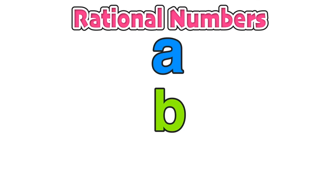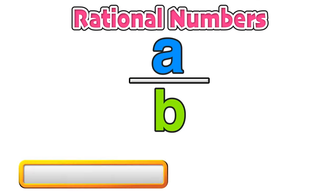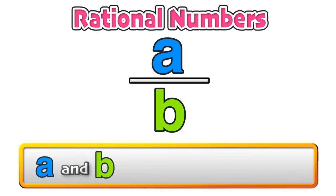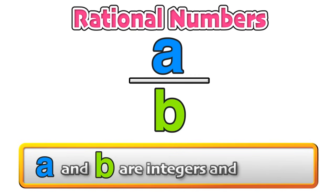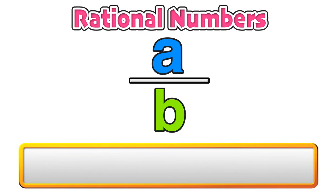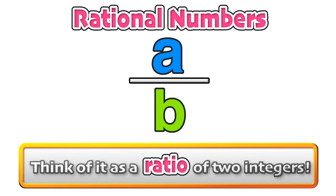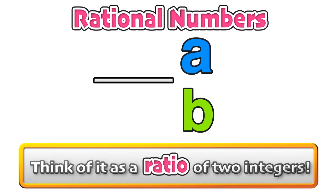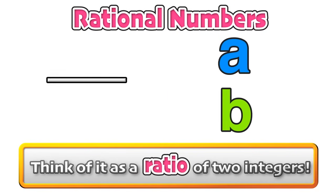We define a rational number as any number that can be expressed as a fraction. Each value a and b must be an integer and b, the denominator, cannot be equal to 0. Simply put, a rational number can be thought of as a ratio of two integers.